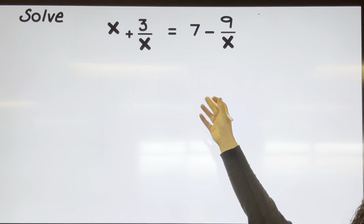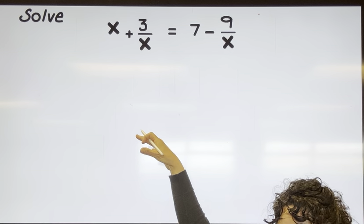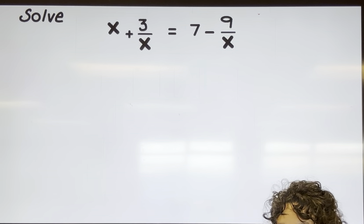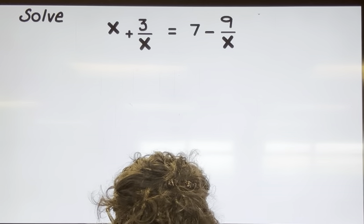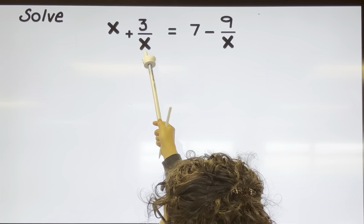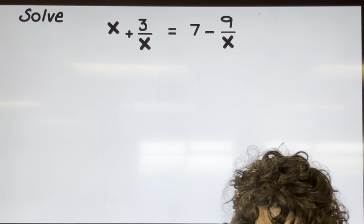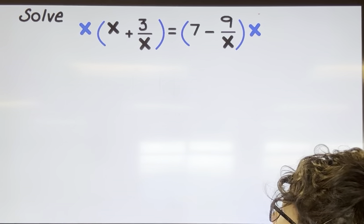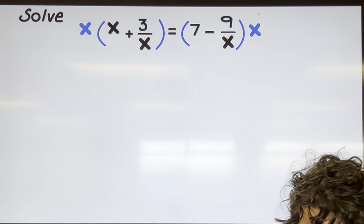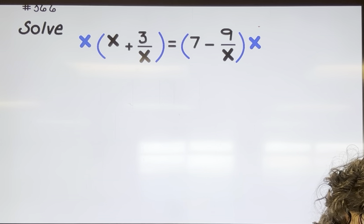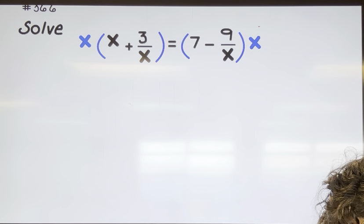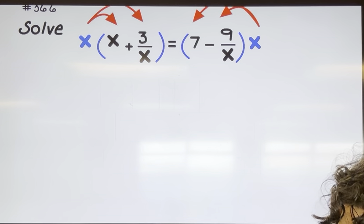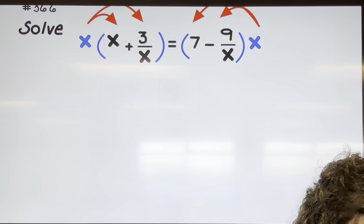We've got an equation that we want to solve, and the equation has fractions, so our first step is going to be to multiply both sides by the denominator. The denominator in this one is X and this one is X, so we're going to multiply both sides by X. That is going to lead me to distributing the X through the left side and distributing the X through the right side.